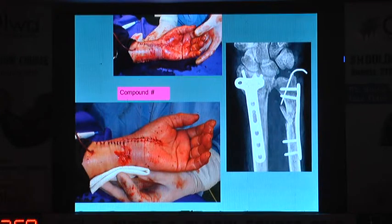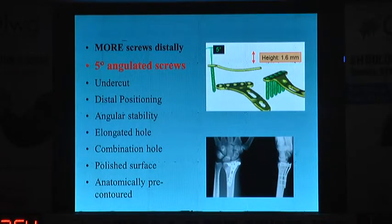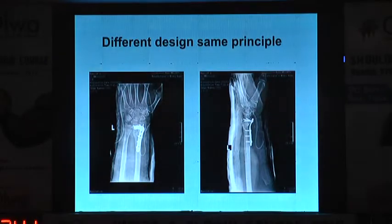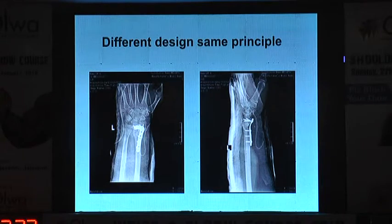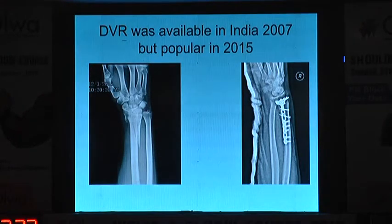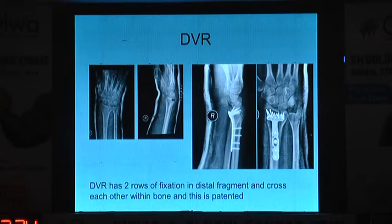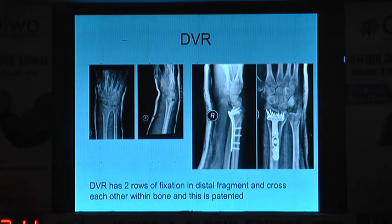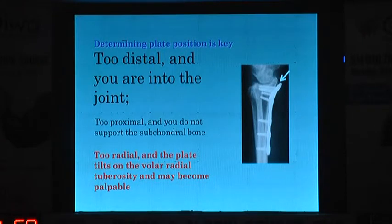These plates were launched in India for the first time in 2007, and we started doing fixation with these and mobilizing patients early to get good results. Even for compound fractures we started using these plates — this was a plate which could go really distally, just proximal to the watershed area, with all screws going proximally five degrees proximal away from the joint so they would not penetrate into the joint. Then the DVR was launched by Zimmer, available in India in 2007. DVR was different from other plates because there were two rows of screws in the distal fragment, and both rows would intersect each other within the bone to give better stability — this was patented.